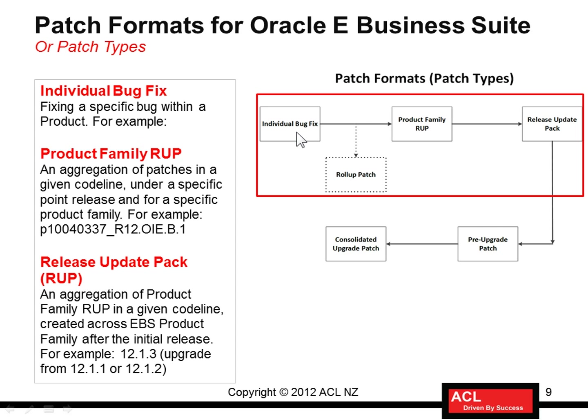What is an individual bug fix? As the name suggests, you get a patch for fixing a specific bug. For example, if someone is entering a purchase order and gets a form error, and upon investigation it's found to be a product issue — something missing or a value not being returned correctly — that's called a bug. It goes back to Oracle support, and they release a fix in the form of a patch. That patch holds good only for one bug, which is why it's called an individual bug fix.